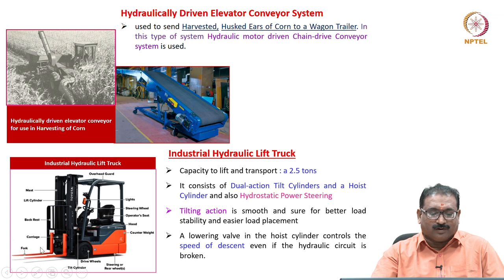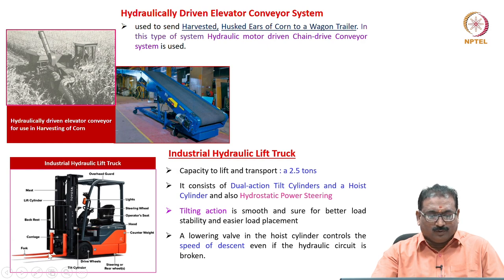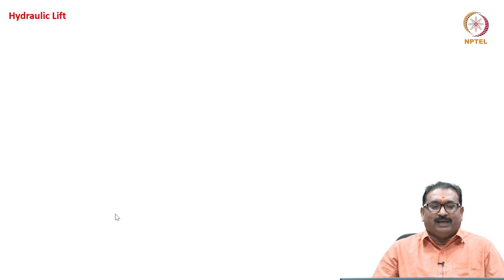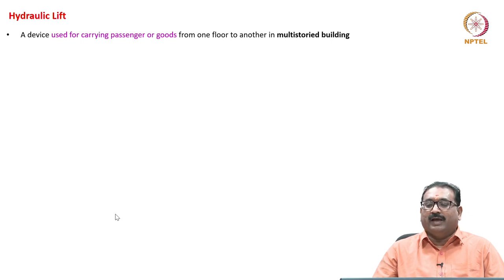Tilt action is smooth and sure for better load stability and easier load placement. A lowering valve in the hoist cylinder controls the speed of descent even if the hydraulic circuit is broken — that is the beauty of the industrial hydraulic lift truck. The operator will push a button to actuate the different actuators to lower or raise the fork, or tilt to any angle using simple levers. Now we will see one more application: the hydraulic lift, a device used for carrying passengers or goods from one floor to another floor in multi-storey buildings. It is purely hydraulically operated.